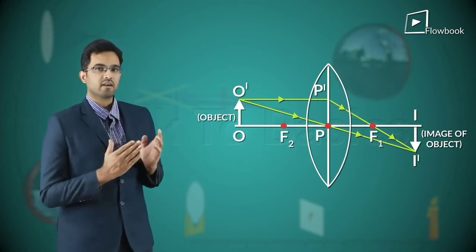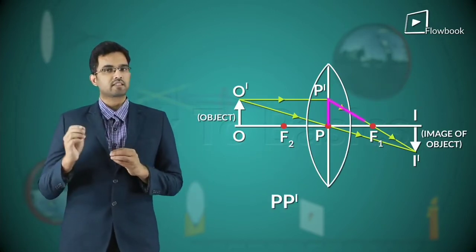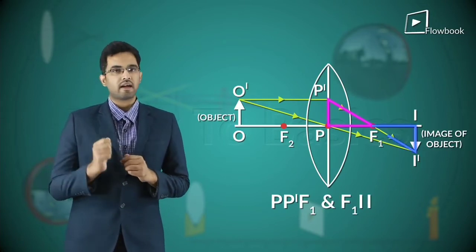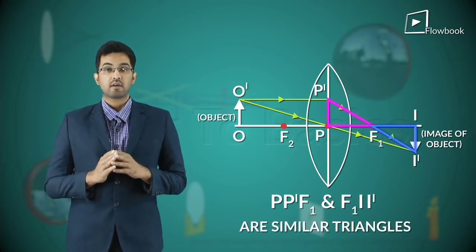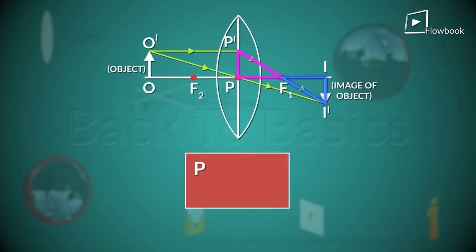Now, from the figure, we can see that PP'F1 and F1I' are similar triangles. Therefore, we can write PP' by I'I' is equal to PF1 by F1I.